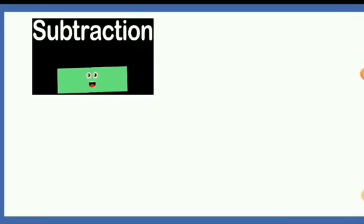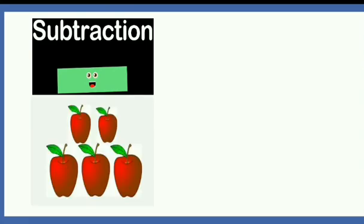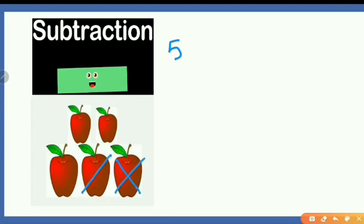You are all very familiar with the subtraction sign. Let's understand it with a very simple example. If you have five apples and a friend came and visited you and he was hungry, you had five apples and you gave him apples to eat. He ate two apples. So how many apples are left? Three. This is the case when there are more apples and the number used is less.